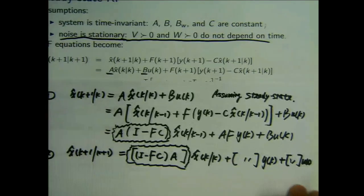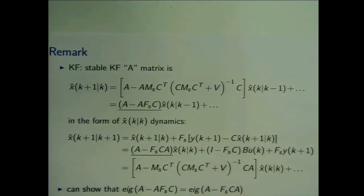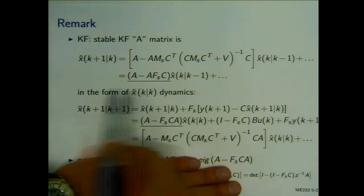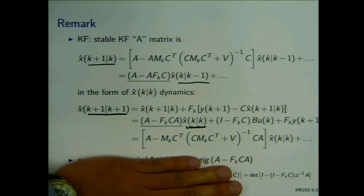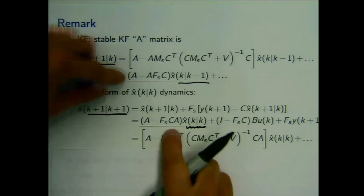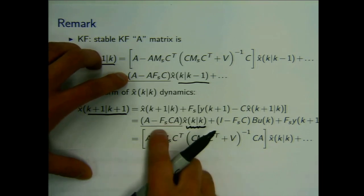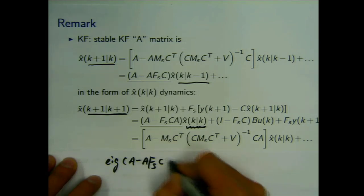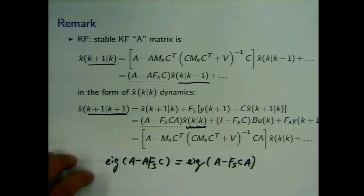I have derived the Kalman filter closed-loop dynamics. The first thing to notice is that the two matrices (A - AFC) and (I - FC)A are different. I have explained that the Kalman filter dynamics is going to be stable, so both of these matrices have guaranteed eigenvalues inside the unit circle.